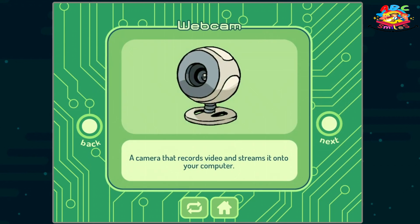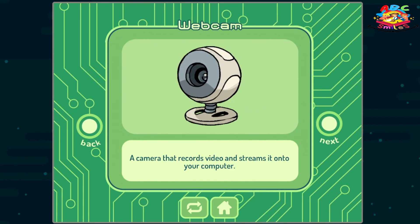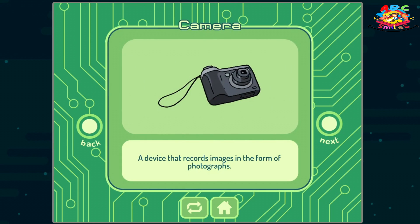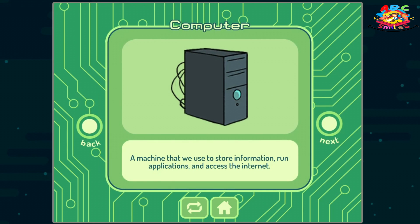Webcam: a camera that records video and streams it onto your computer. Camera: a device that records images in the form of photographs. Computer: a machine that we use to store information, run applications and access the internet.